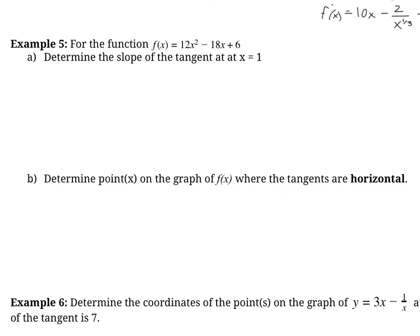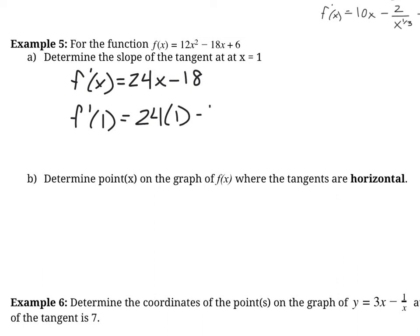Now let's determine the slope of the tangent at x equals 1. We need the derivative first, since the derivative equals the slope of the tangent. So f prime of x equals 24x minus 18. To find the slope at x equals 1, we plug in 1: f prime of 1 equals 24 times 1 minus 18, which equals 6. So much easier than using the difference quotient.